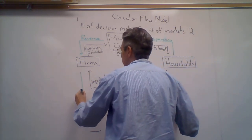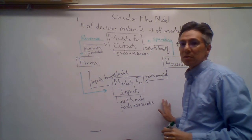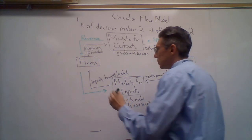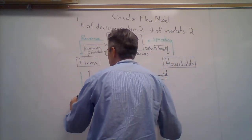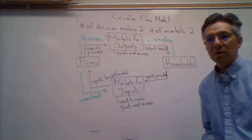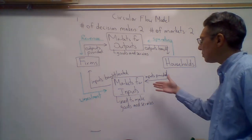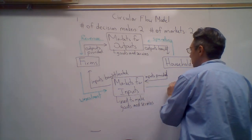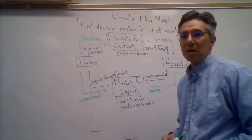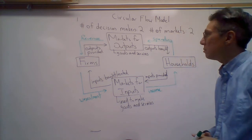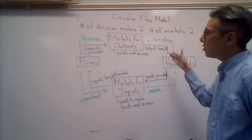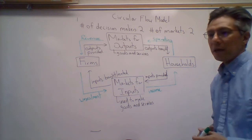What do firms do with this revenue? They have to pay for the inputs. They have to pay wages and rent. What does this become for the households? This becomes their income. That's how we get the circular flow model: starting with the decision-makers, adding in the markets, looking at these flows—first goods and services, then the flow of money—and there we have the model.